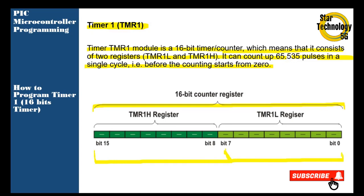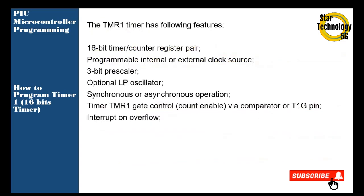Timer 1 has the following features: 16-bit timer/counter register, programmable internal or external clock source, 3-bit prescaler option, LP oscillator, synchronize or asynchronous operation, Timer 1 gate control.